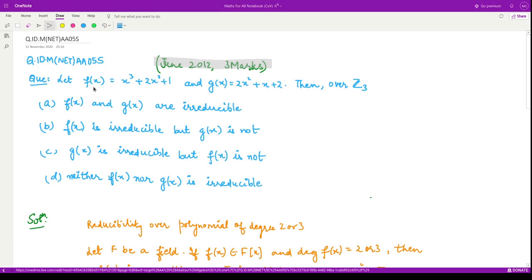The question says, if f(x) is given to be x³ + 2x² + 1, this is a polynomial of degree 3, and g(x) is given to be 2x² + x + 2 which is a polynomial of degree 2.